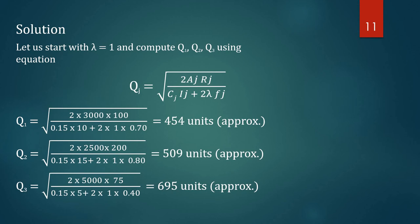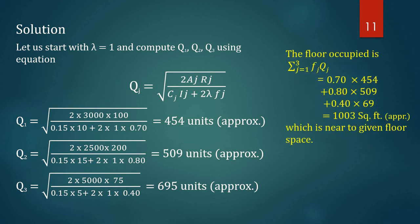We get Q1 = 454 units, Q2 = 509 units, and Q3 = 695 units. The floor space occupied is sigma of fj·Qj: 0.70×454 + 0.80×509 + 0.40×695, which turns out to be 1003 square feet. This is very close to the given floor space of 1000 square feet.